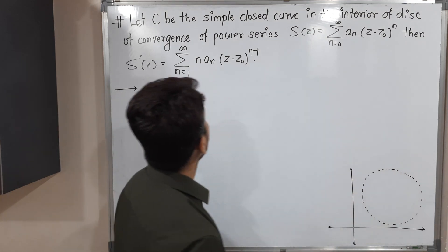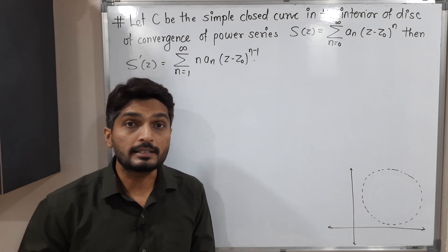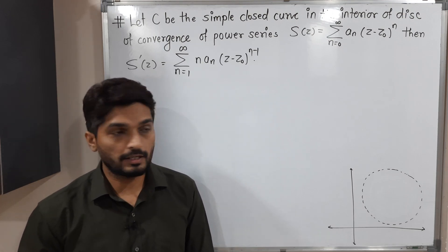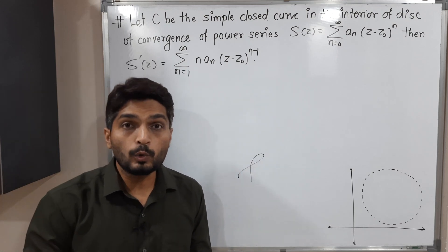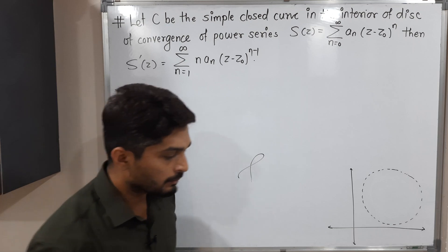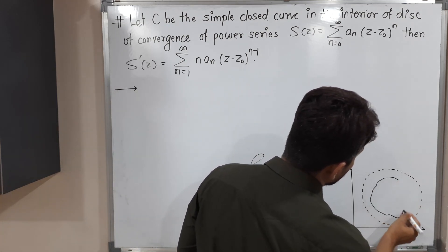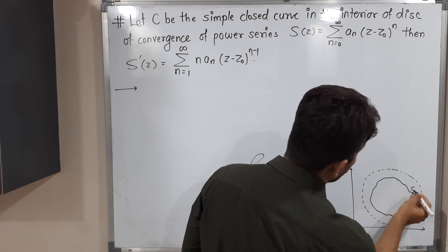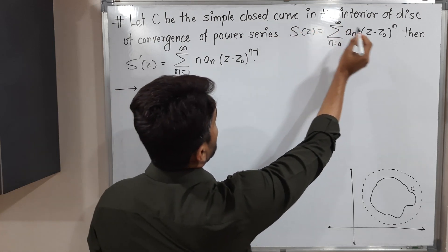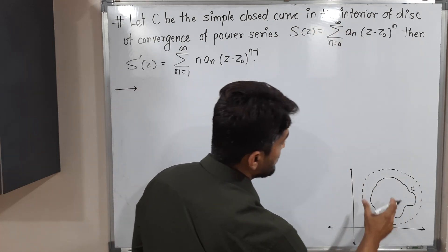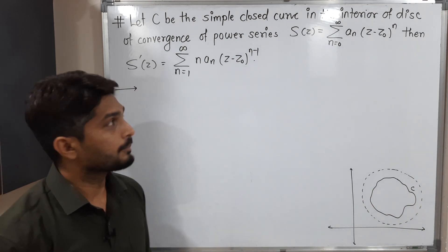We have a disk of convergence, and C is a simple closed curve — simple meaning it does not intersect itself, and closed meaning the starting and ending point is the same. The curve C lies entirely inside the disk of convergence.